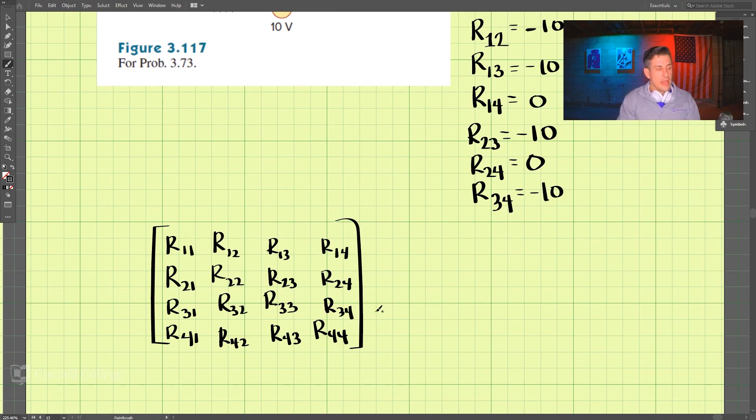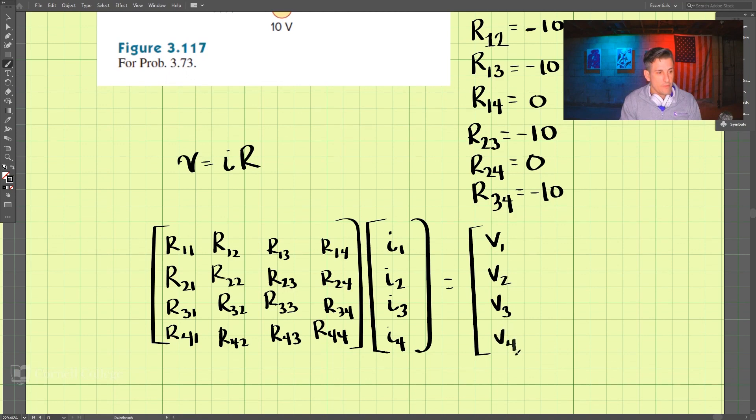And then if we multiply these by the current i1, i2, i3, and i4, right, we have, remember, V equals I times R, and this is equal to then we have the voltage V1, V2, V3, V4.